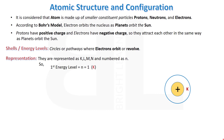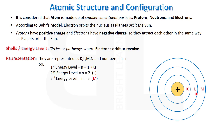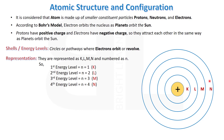K is the first shell, closest to the nucleus, so its number is one. As we move further away from the nucleus, the number of the energy level increases. The second shell is L, the third is M, and the fourth energy level has the number four.